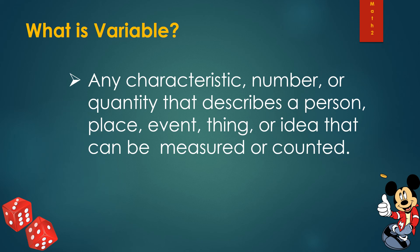For example, the age of a person is a variable because when you ask anybody about their age, it's going to be varying in value. Some might say they are 17, some 18, some 19, 20, or any other value. Values might be repeated, but they vary per person you ask — that's a variable.